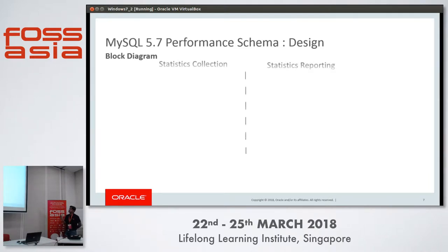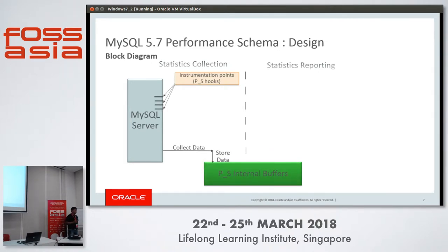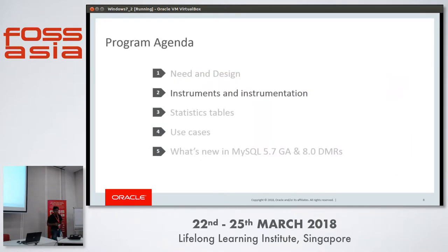Let's understand how Performance Schema looks from a bird's-eye view. There are two parts: statistics collection and statistics reporting. In statistics collection, the running MySQL server collects statistics and keeps them in performance buffers. In statistics reporting, a user queries Performance Schema tables to see the statistics. In the MySQL source code we introduced many instrumentation points; when control reaches these points, it is transferred to the Performance Schema module, which collects the runtime statistics and stores them into internal buffers. A user can then fire simple queries on Performance Schema tables to fetch and display that data.